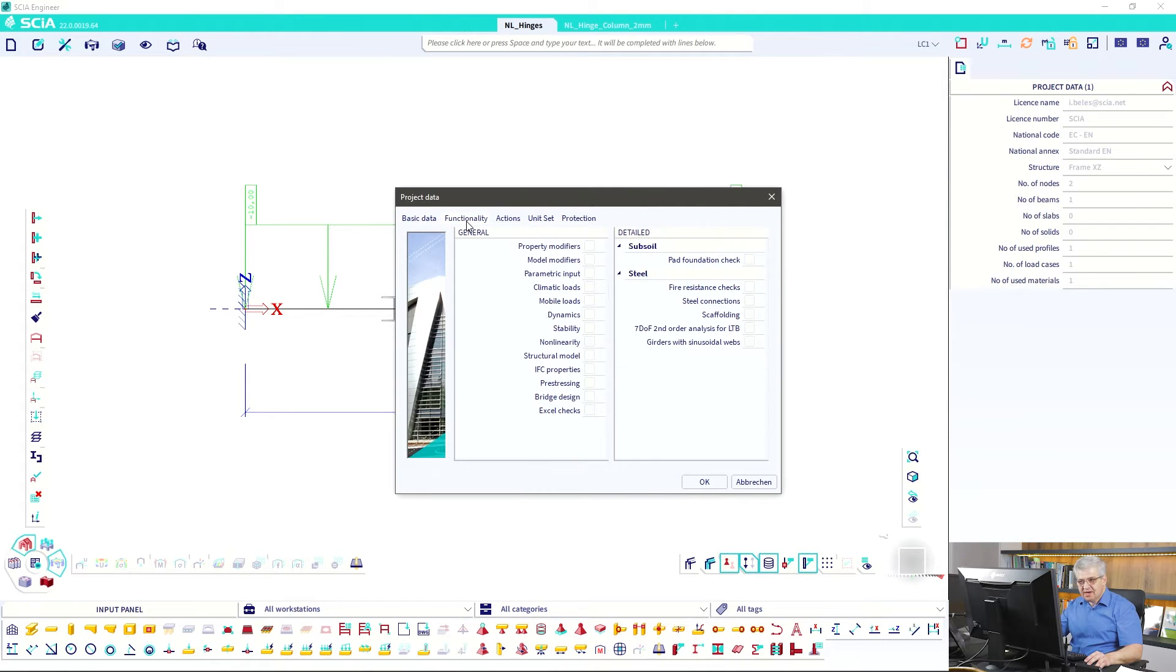What do we need? We need nonlinear calculations. So there is nothing activated. We need nonlinear calculation and from this nonlinearity we need beam local nonlinearity. That's everything. It's not a second order calculation. It's nonlinear but this is only physical nonlinearity, not geometrical nonlinearity.